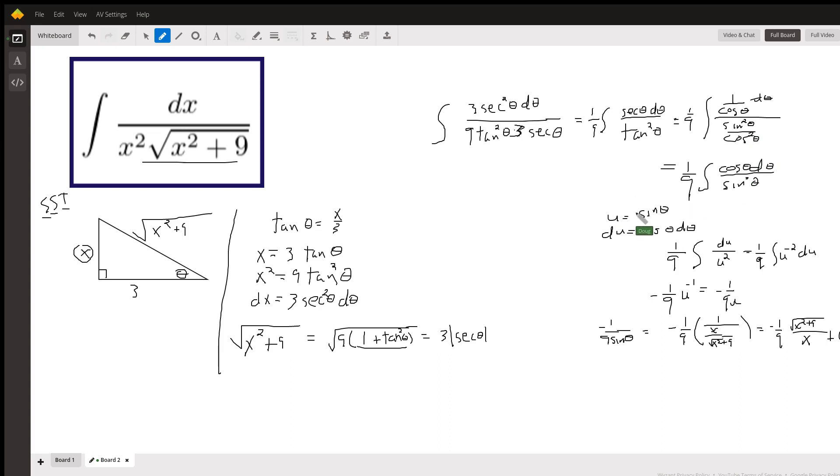Use U substitution. U equals the sine of theta. So du equals the cosine of theta d theta. There is the antiderivative right here. Negative 1 ninth U to the minus 1, or negative 1 over 9 U.